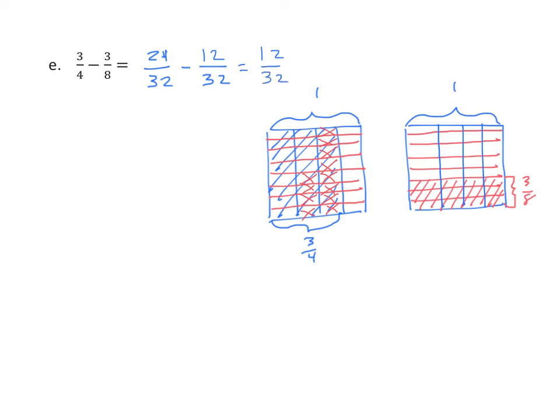Now, we can do something else with this. We can simplify this fraction. Both the numerator and the denominator are divisible by four. So, twelve divided by four equals three. And thirty-two divided by four equals eight. So, our answer is three-eighths.